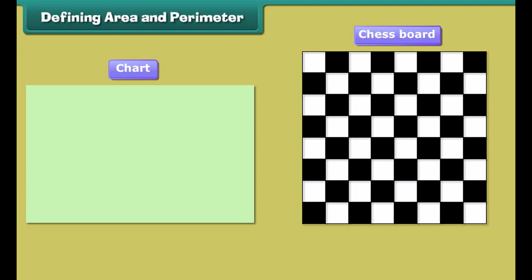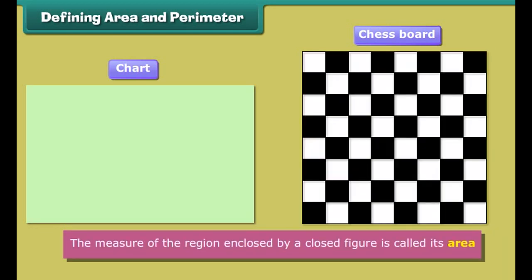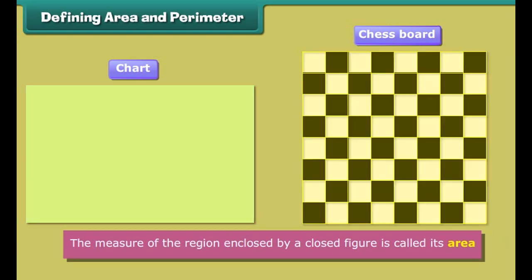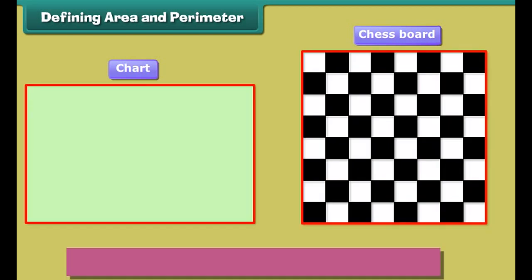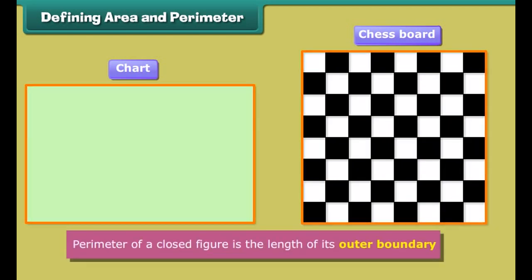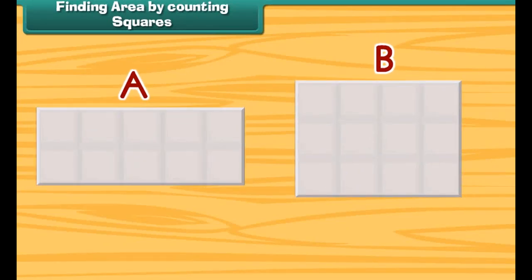Friends, we already know about closed figures like squares and rectangles. For example, this chart paper is a rectangular chart while the chessboard is a square. How can the area and perimeter of such mathematical figures be calculated? The measure of the region enclosed by a closed figure is called its area. Perimeter of a closed figure is the length of its outer boundary. Let us now find the ways of calculating area and perimeter of rectangles and squares.